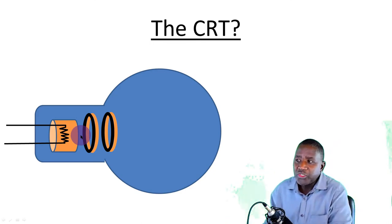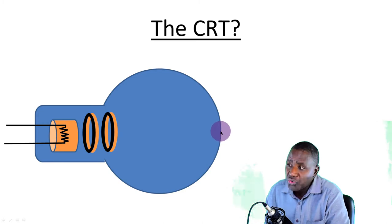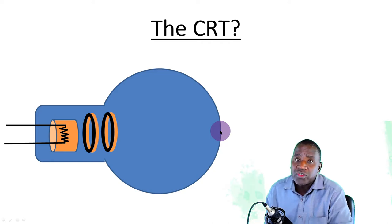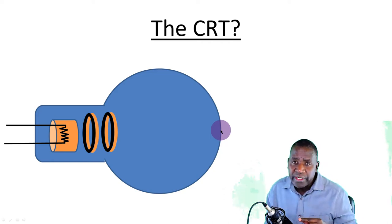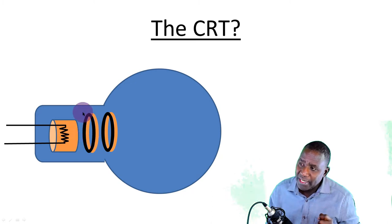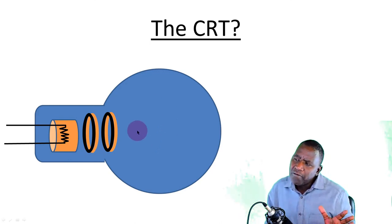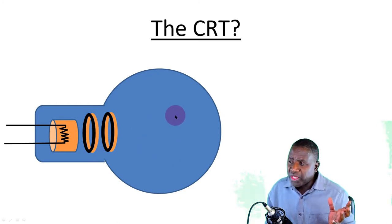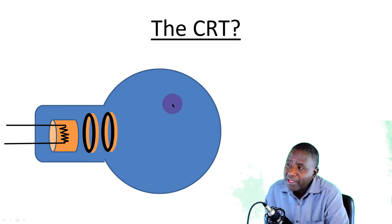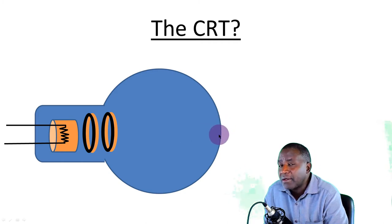The grid repels those slow electrons. Once you remove the slow electrons from the beam, the number of electrons reaching the screen is going to reduce. There are two methods to control the number of electrons reaching the screen: you can control it using the heater current, or you can control it using the voltage connected to the grid. The grid is located between the cathode and the first anode.